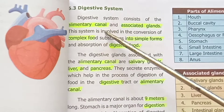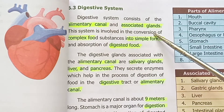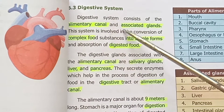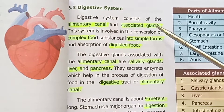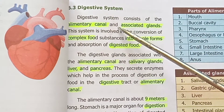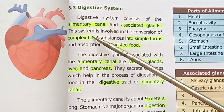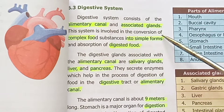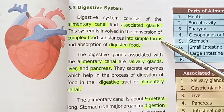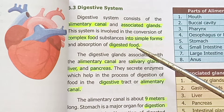The digestive system consists of the alimentary canal and associated glands. This system is involved in the conversion of complex food substances into simple forms, and the absorption of digested food.